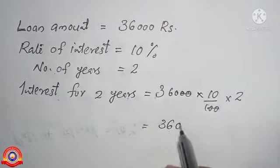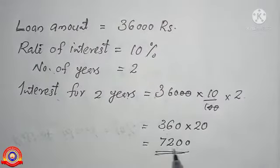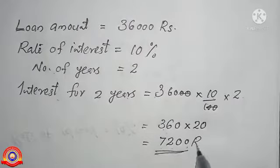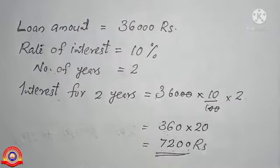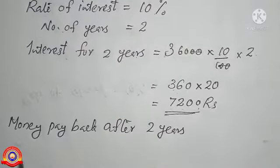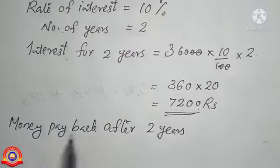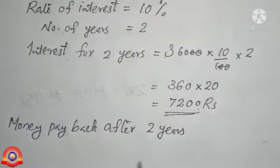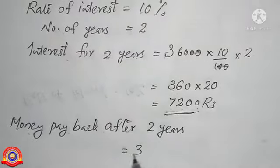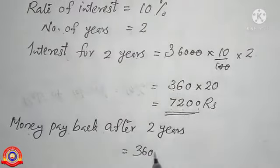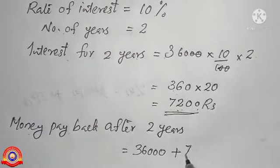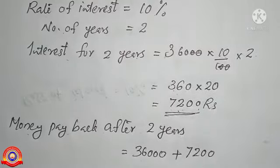Money to pay back after two years is equal to loan amount plus interest, that is 36,000 plus 7,200 rupees, which is equal to 43,200 rupees.